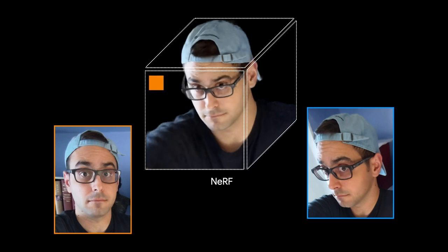Here we flip back and forth between two observations, which correspond to the image outlined in orange and in blue. You can see that the person's head has moved between the two observations. Focusing on the top right corner of the glasses, it's clear that the rays corresponding to the same point do not intersect.